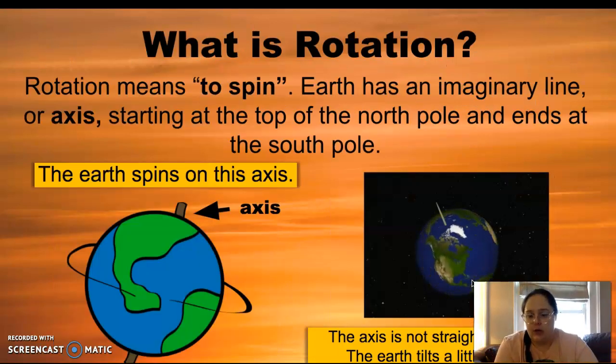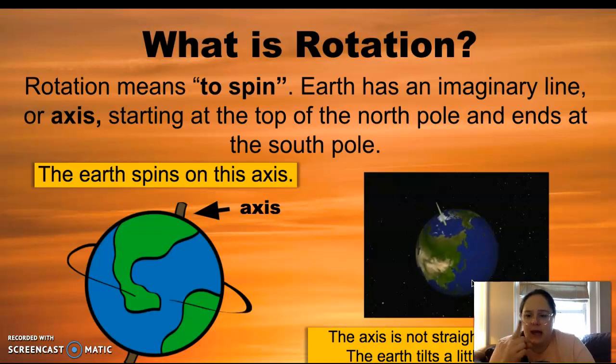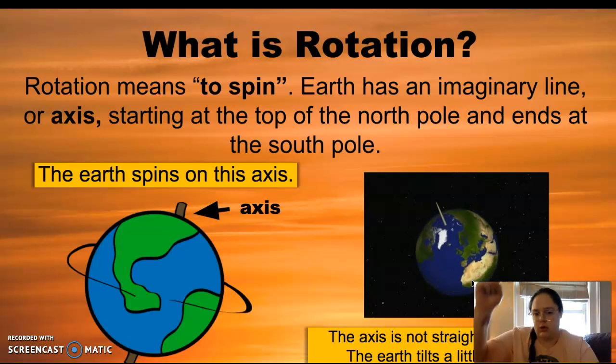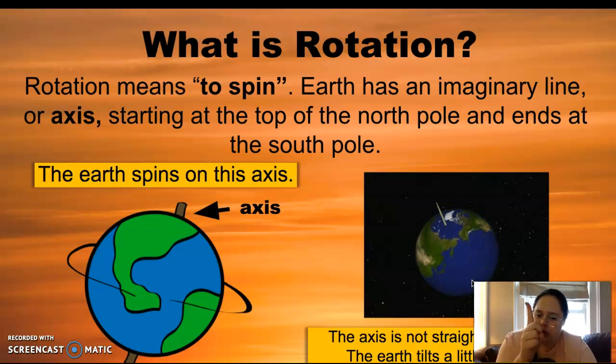So rotation means to spin. Earth is spinning on that imaginary line called an axis. And that starts at the North Pole and ends at the South Pole. It's important to know that the axis is not straight up and down. It is tilted. It's not straight up and down, it's tilted either towards the sun or away from the sun. And we'll talk about that in a little bit.